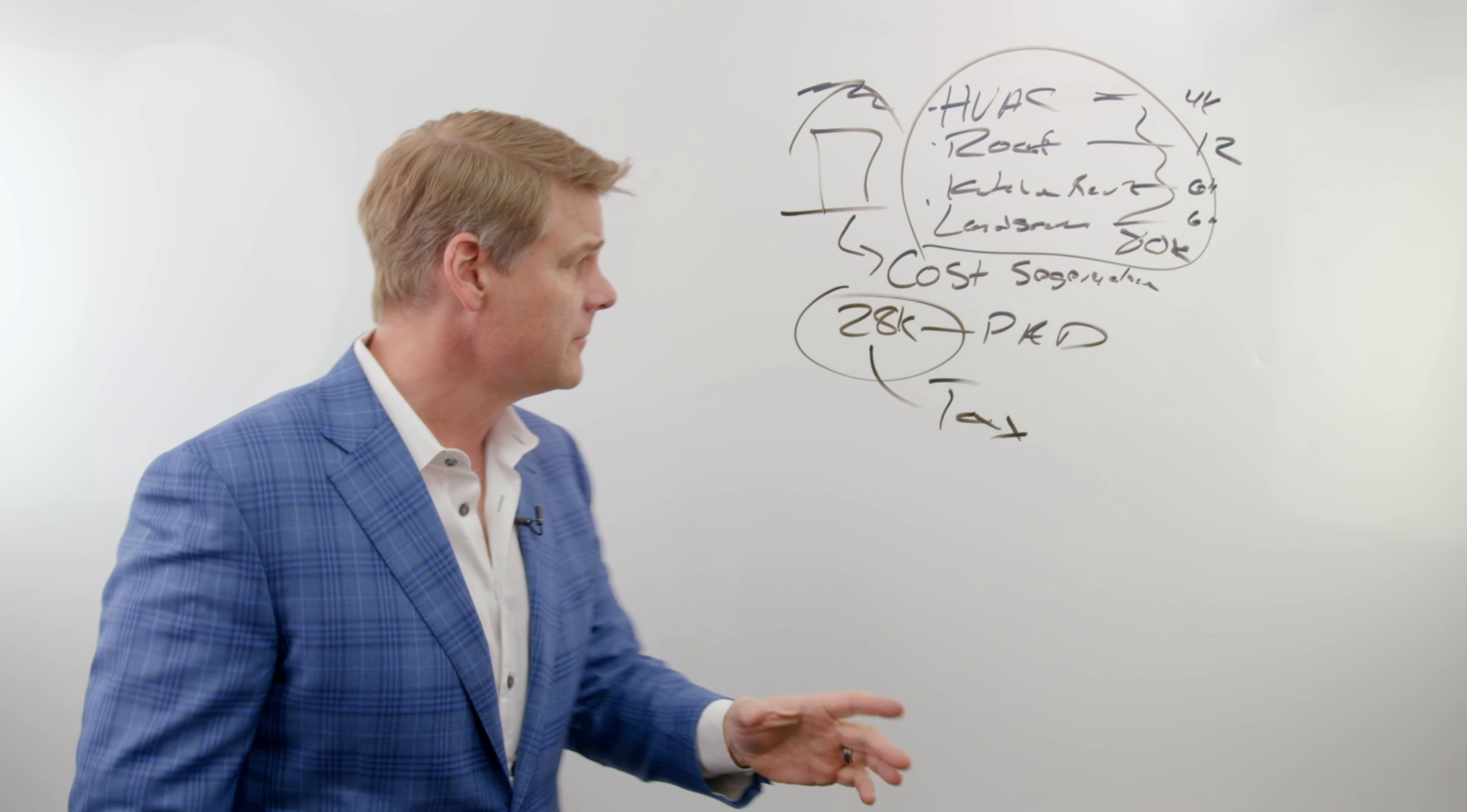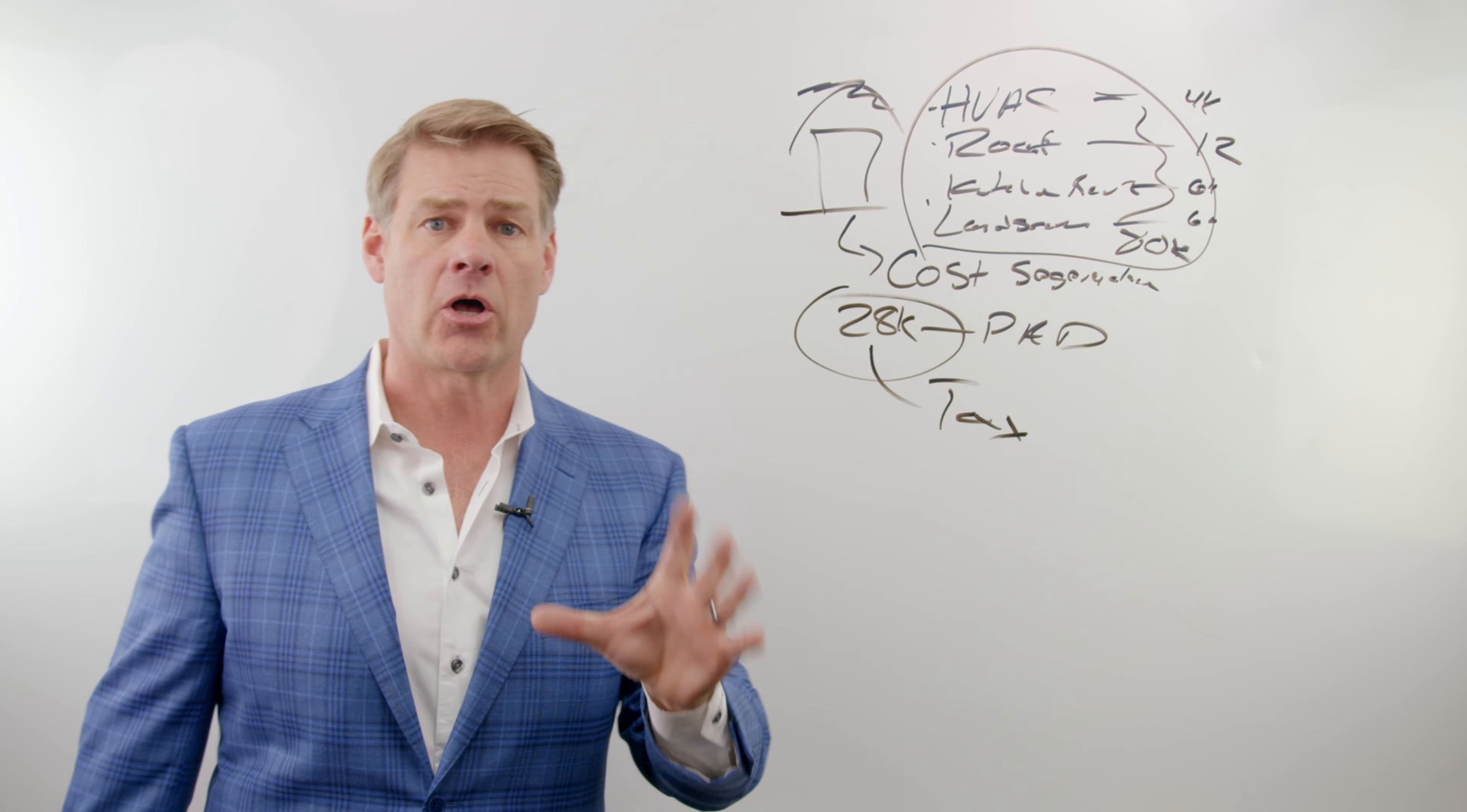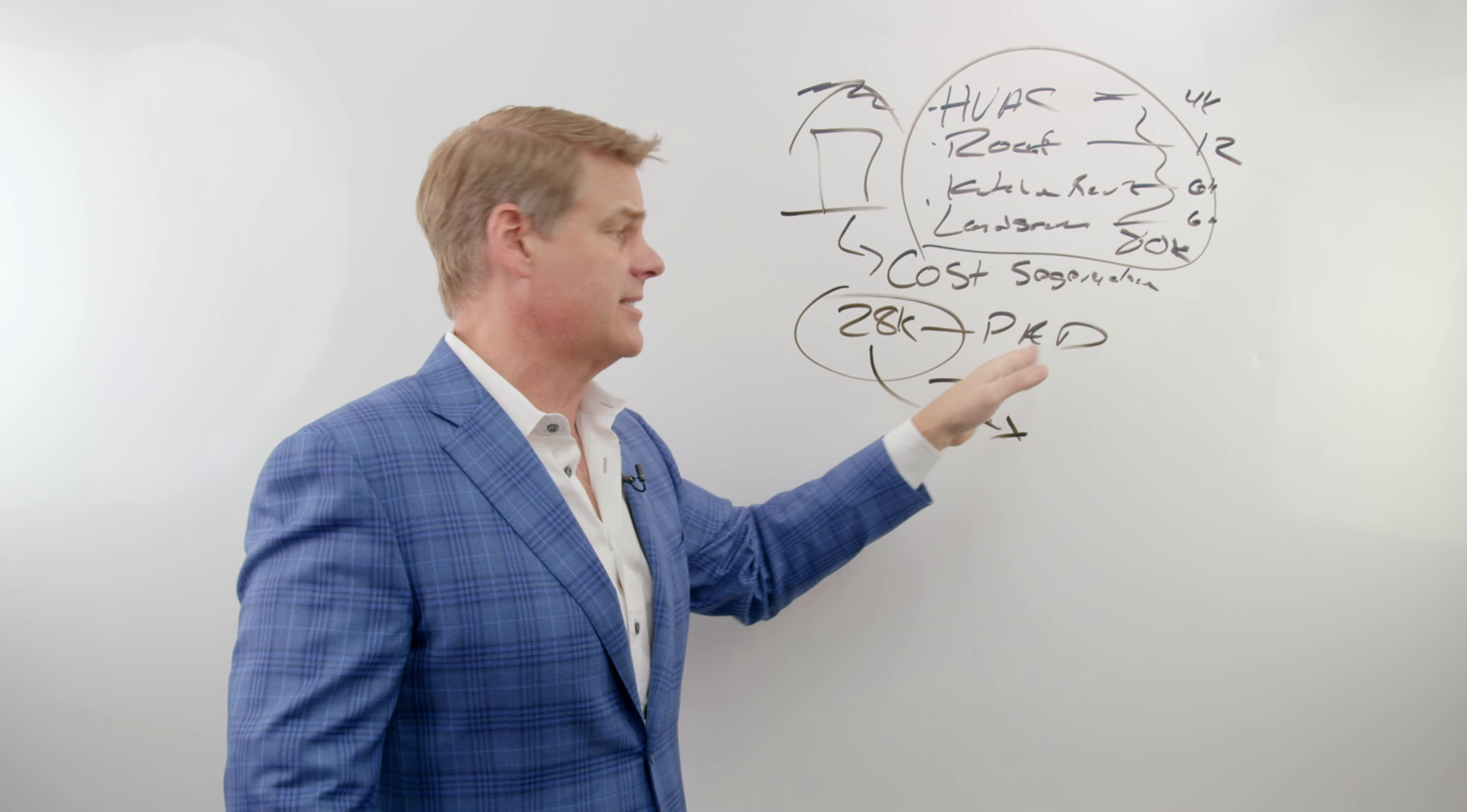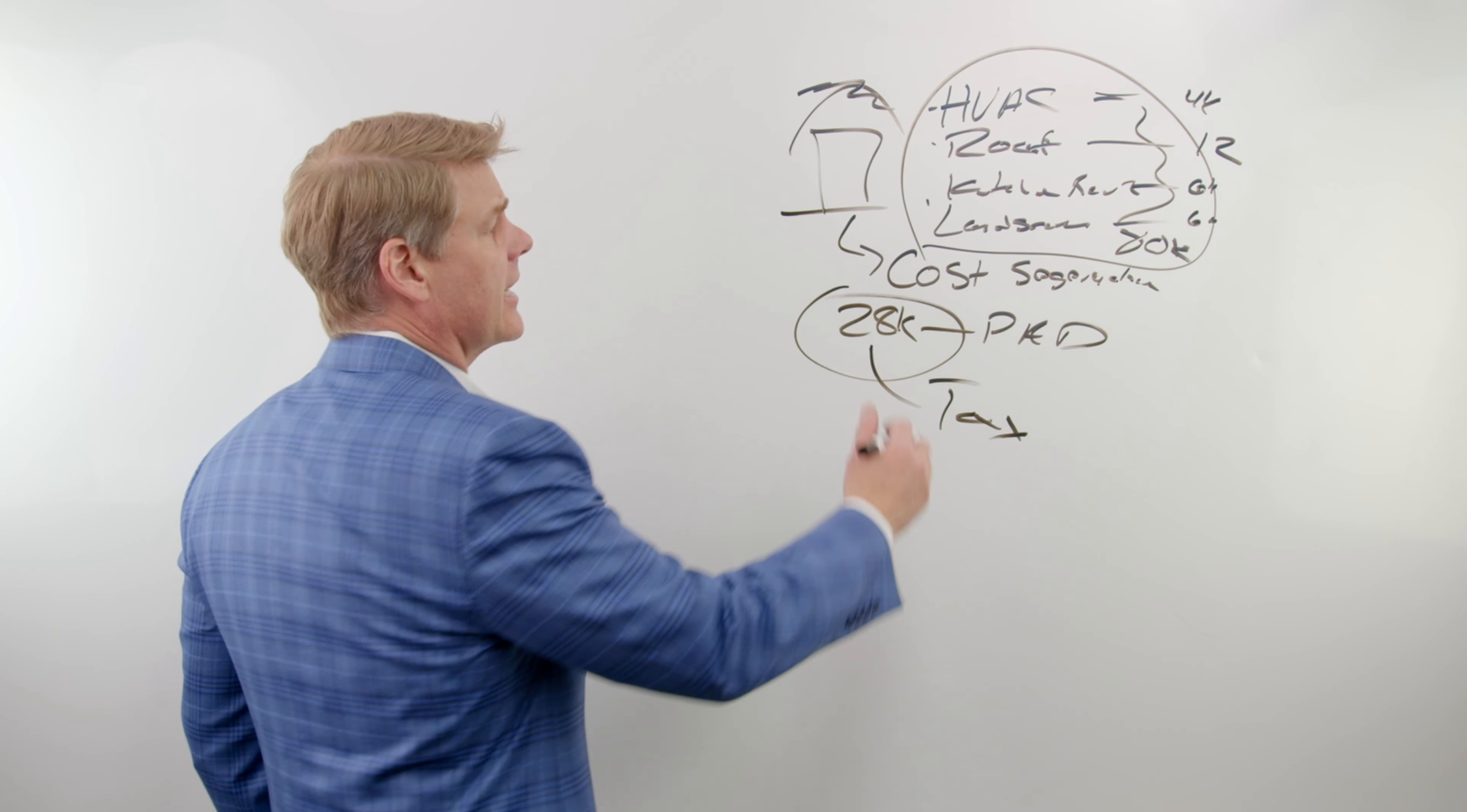People throw away tax deductions all the time with their real estate because they're unaware of this strategy. Again, the numbers have to make sense, right, to do this. But now here's where you're going to double this up, and that's why I call it a hidden tax strategy because you're going to get $28,000 on your partial asset disposition, the PAD. And then you're going to come in, you're going to do all this work.